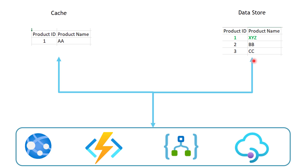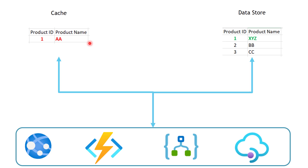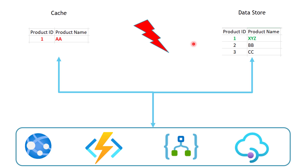Now let's say that we have updated the product name to XYZ in the data store, but we don't have any consistency built between the data in the data store and the data in the cache. So the data in the cache still shows the old product name for product ID 1, while it's now become XYZ in the data store. When the application layer gets a request to retrieve information about product ID 1, it finds the old product name in the cache and retrieves it, even though it's been updated. This is one of the challenges this pattern is trying to solve — how to maintain consistency between the data store and the cache.